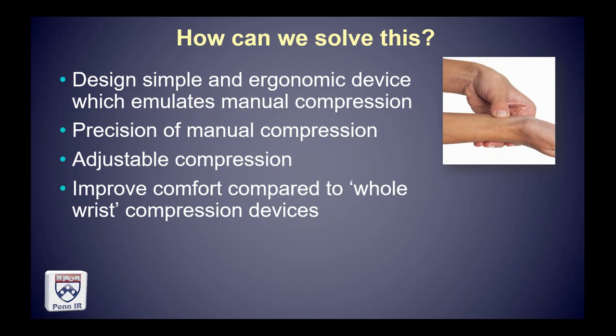You're not applying compression to an entire wrist — you're applying compression to just where it's needed and not where it's not needed. You're not pressing over the radial nerve, the radial veins, the ulnar artery, the ulnar nerve, the dorsum of the wrist. You're just applying it to where it needs to be, compared to these whole-wrist compression devices.